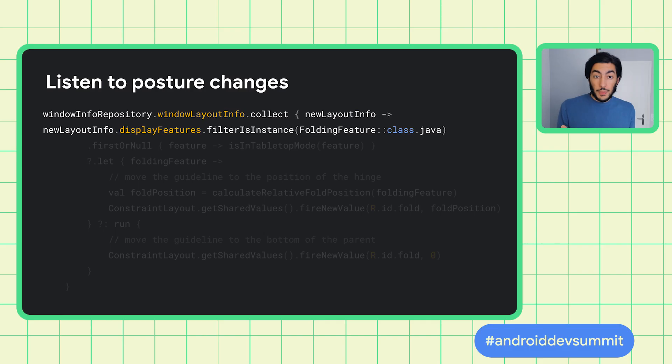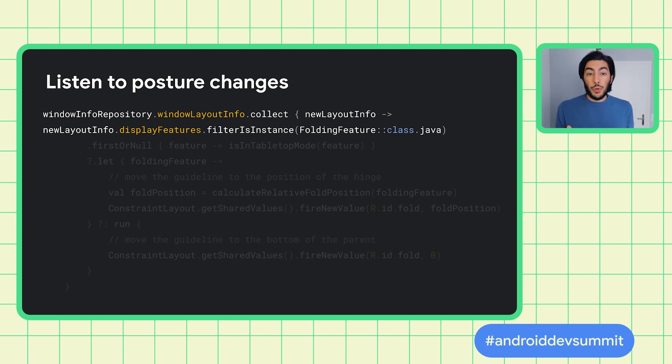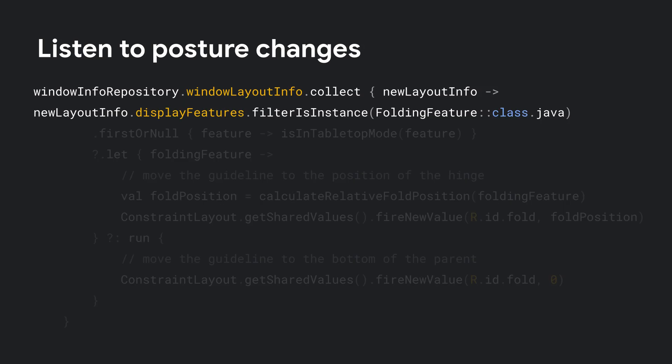With that layout defined, it's now time to make your app fold-aware. Jetpack Window Manager comes to help with this task. After it is initialized, the library allows you to listen for layout changes by collecting the flow exposed by WindowInfoRepository. Every time you get new layout information, you can query the display features and check the device postures.